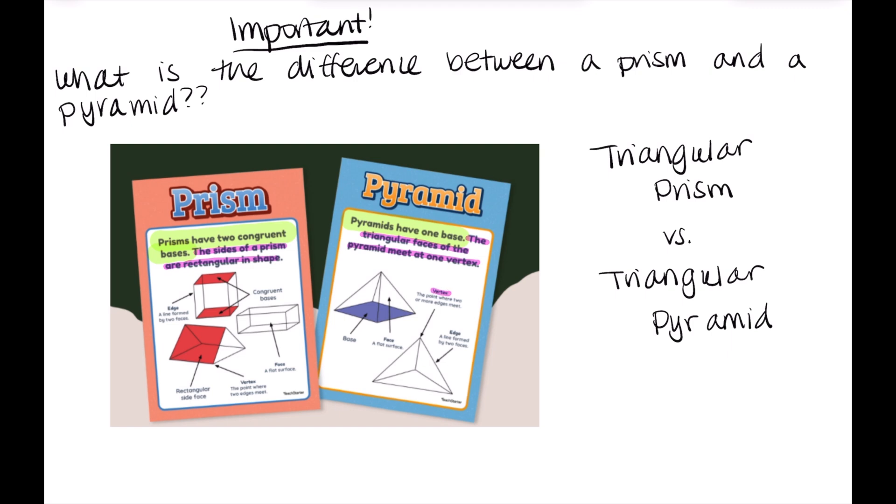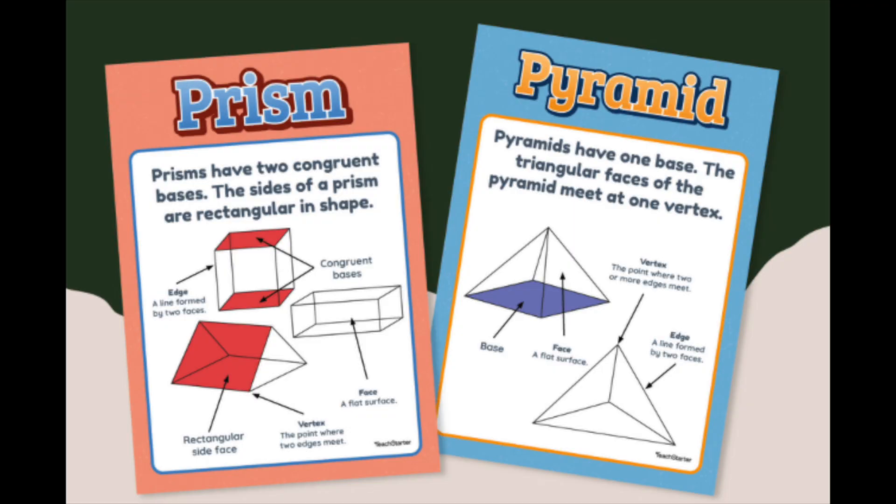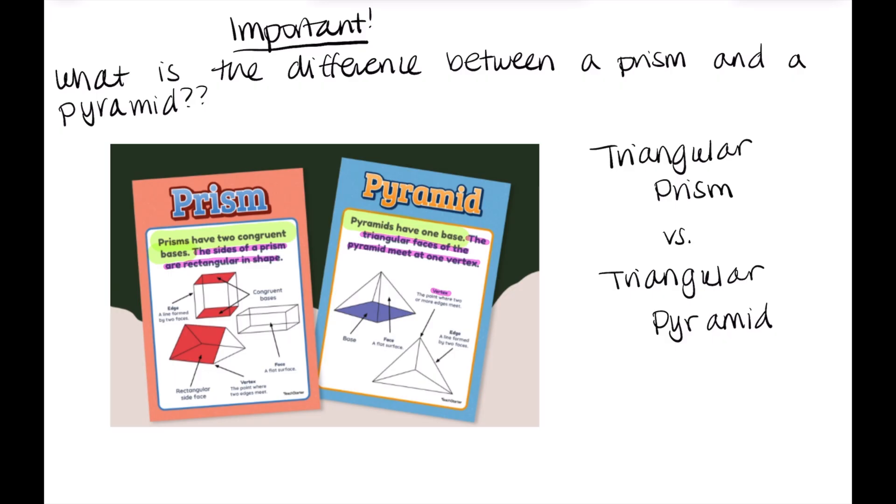And the other one for a pyramid, the faces are triangles, right? In this case, because it's a triangular pyramid, whereas for the prism, the faces and the sides are rectangular in shape. The last note to make here is that for a pyramid, all of the faces meet at a vertex. And a vertex is where a series of points meet. So those are the differences between a pyramid and a prism.